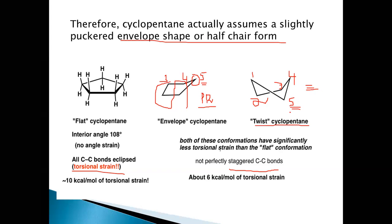It's continuously interchanging between all these conformations and this is called pseudo-rotation. The same is true in the case of the half-chair form also, where there is interchangeability between these conformations where different carbon atoms may be above or below the plane. In this case C4 is above the plane and C5 is below the plane of the molecule, but at another point of time C3 will be above the plane and C2 is below the plane. This particular interchangeability is called pseudo-rotation. Between the envelope and the half-chair form, the half-chair form is slightly more stable.